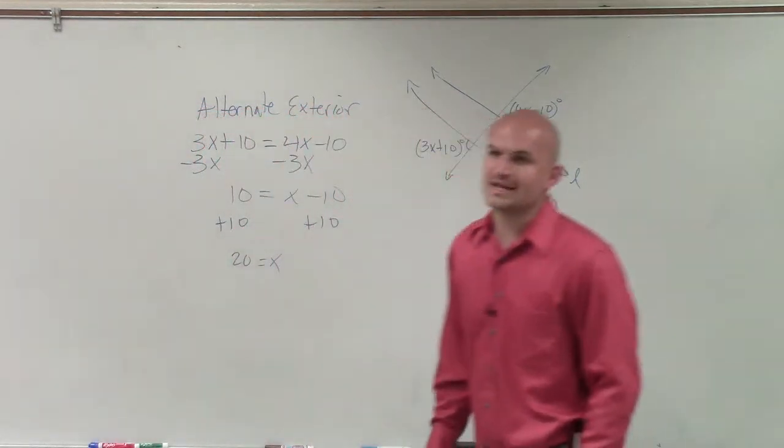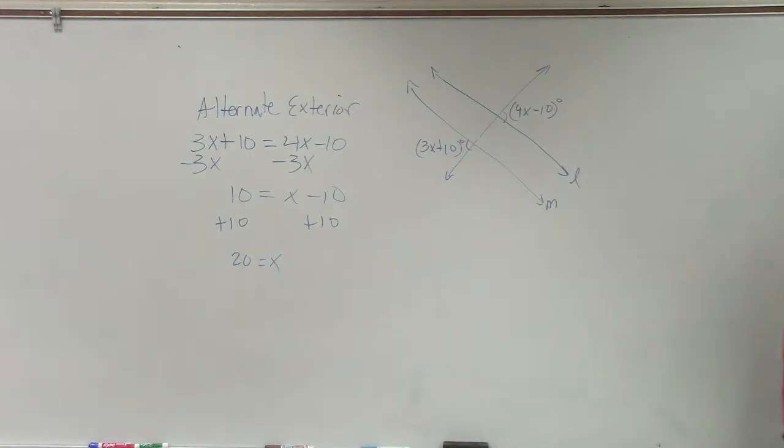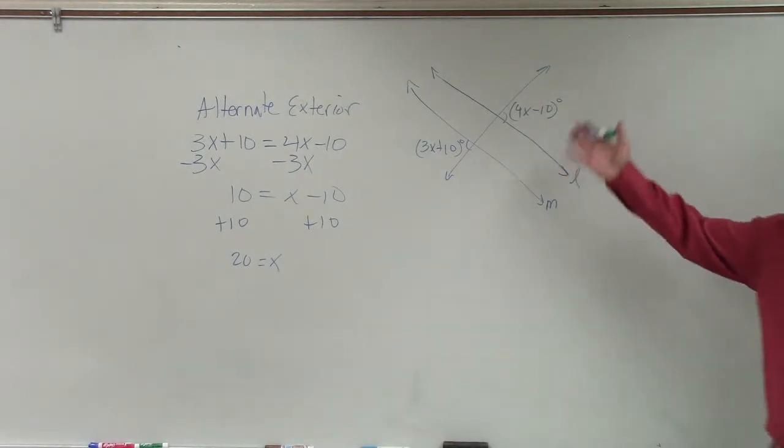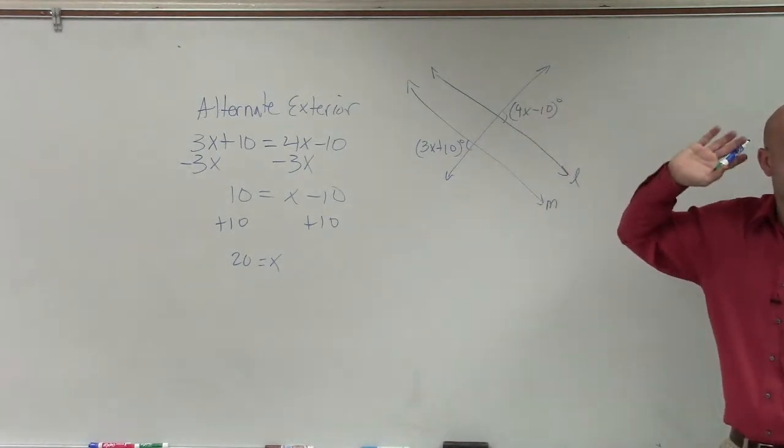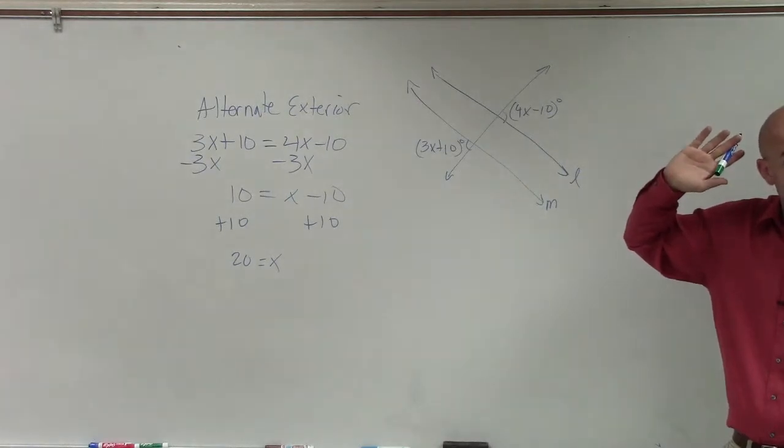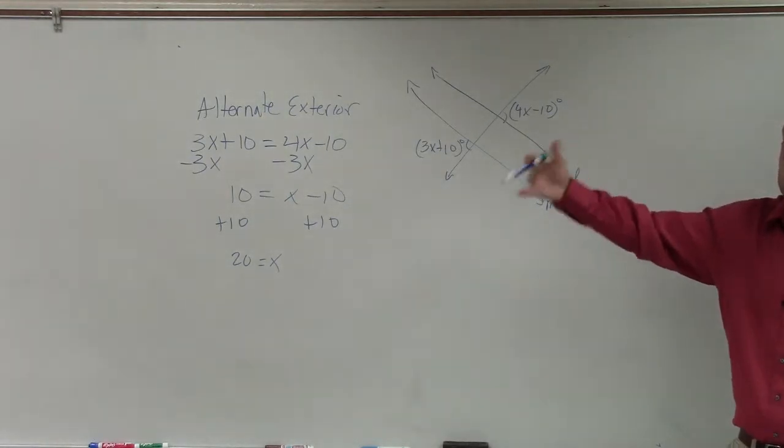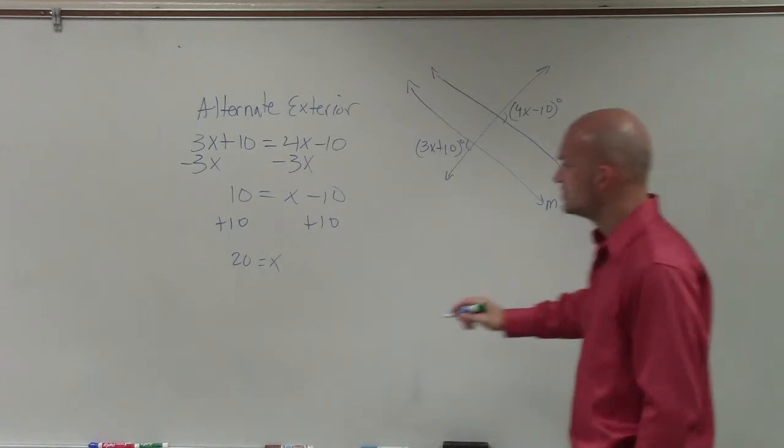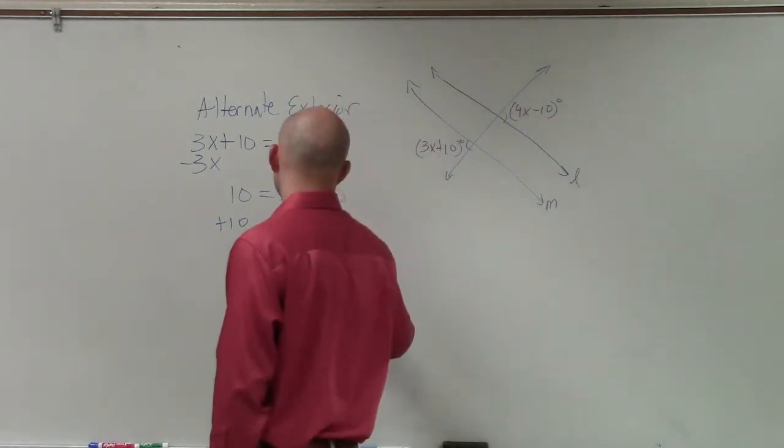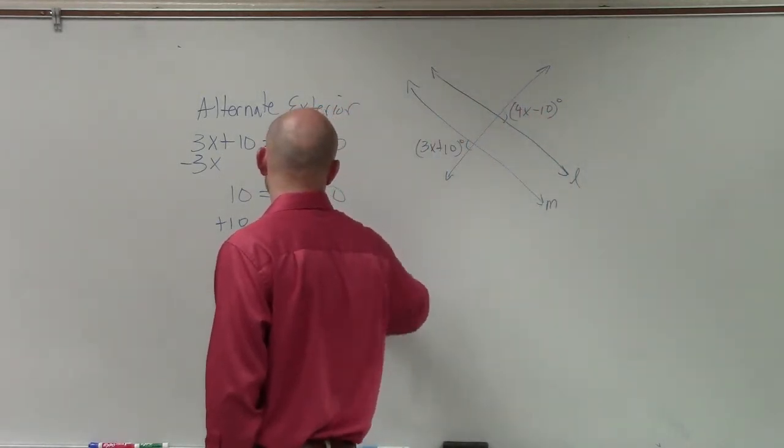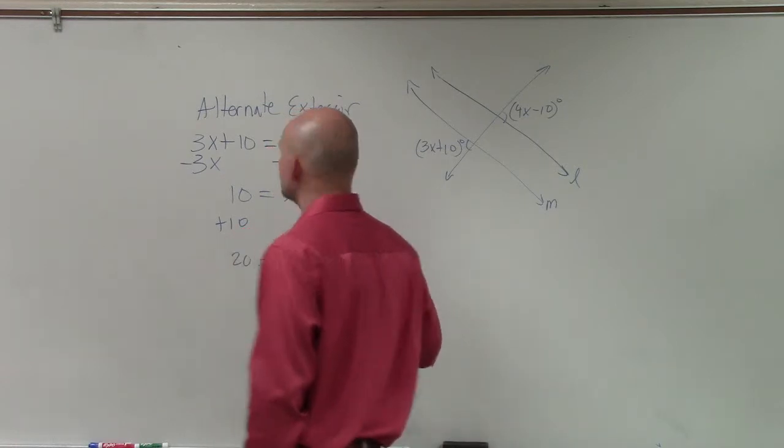So what that states is now when x equals 20, my alternate exterior angles are equal in value. And when they're equal in value, that now shows that when x equals 20, m is parallel to l.